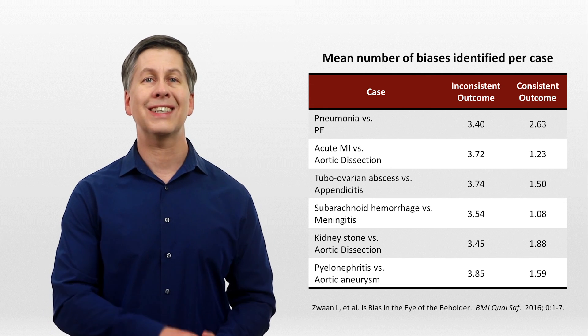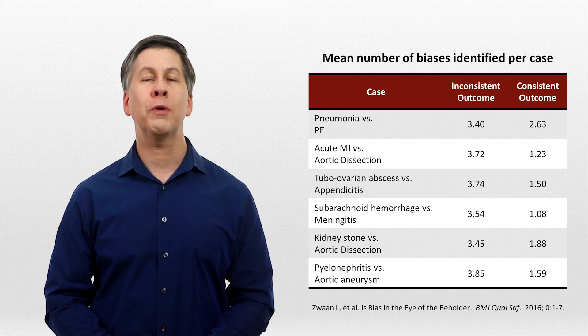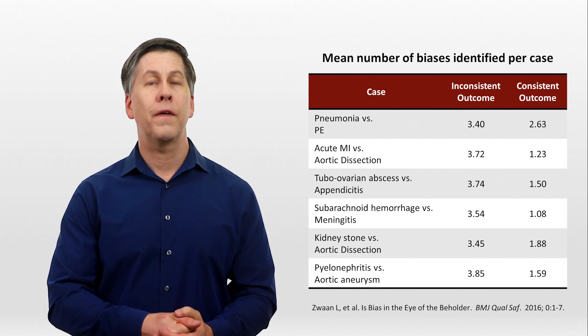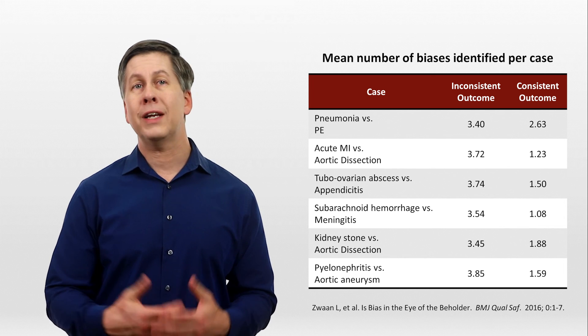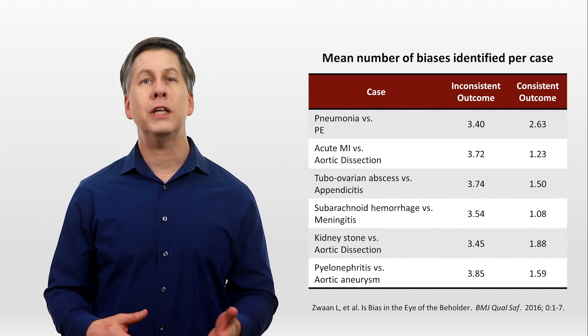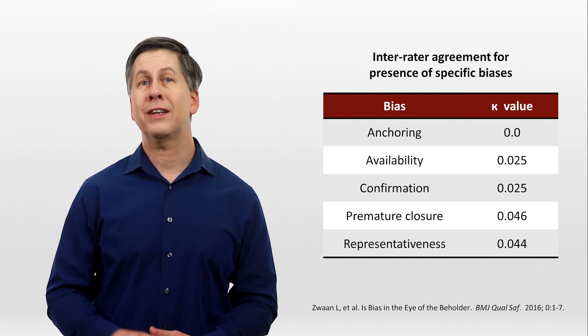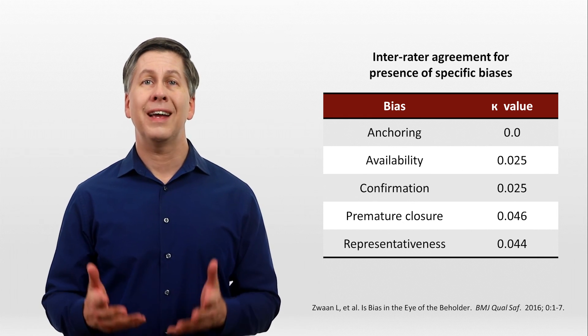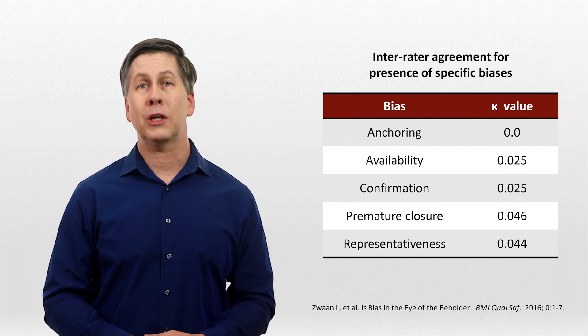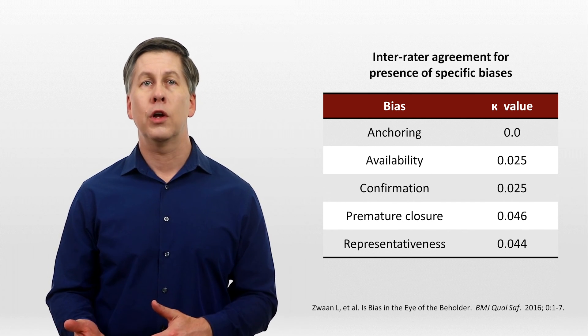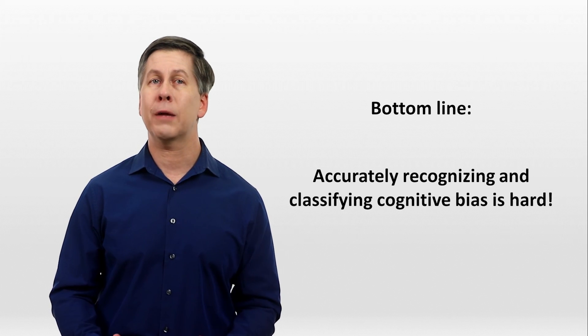The first thing to note about the results is that the number of biases identified in each case depended on whether the outcome was consistent or inconsistent with the case physician's diagnosis. This is one form of hindsight bias — the idea not just that diagnoses are more obvious after the fact, but also that if they were missed, a mistake in reasoning was more likely to have been made. Whereas in actuality, you can be impacted by cognitive bias, make a mistake in reasoning, but still get the right diagnosis anyway. What was more interesting was how well the respondents agreed on which biases were present — or rather, how well they disagreed. When looking at the Kappa value, which is a measure of inter-observer agreement varying from negative 1 to positive 1, their level of inter-rater agreement was terrible. The bottom line: accurately recognizing and classifying bias is hard.